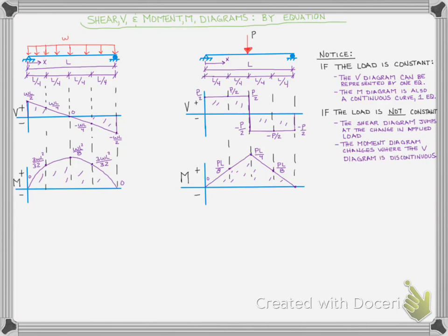But when the load is not constant, when it has a discontinuity—it goes from the reaction at the pin to a point load, so it's zero between the pin and the point load and then suddenly there's this discontinuity at the point load—the shear diagram is going to need two equations to represent it because I have two different horizontal lines at different values. And then my moment diagram also has a discontinuity right in the middle, so I would need more than one equation to represent that. That's really important to notice.